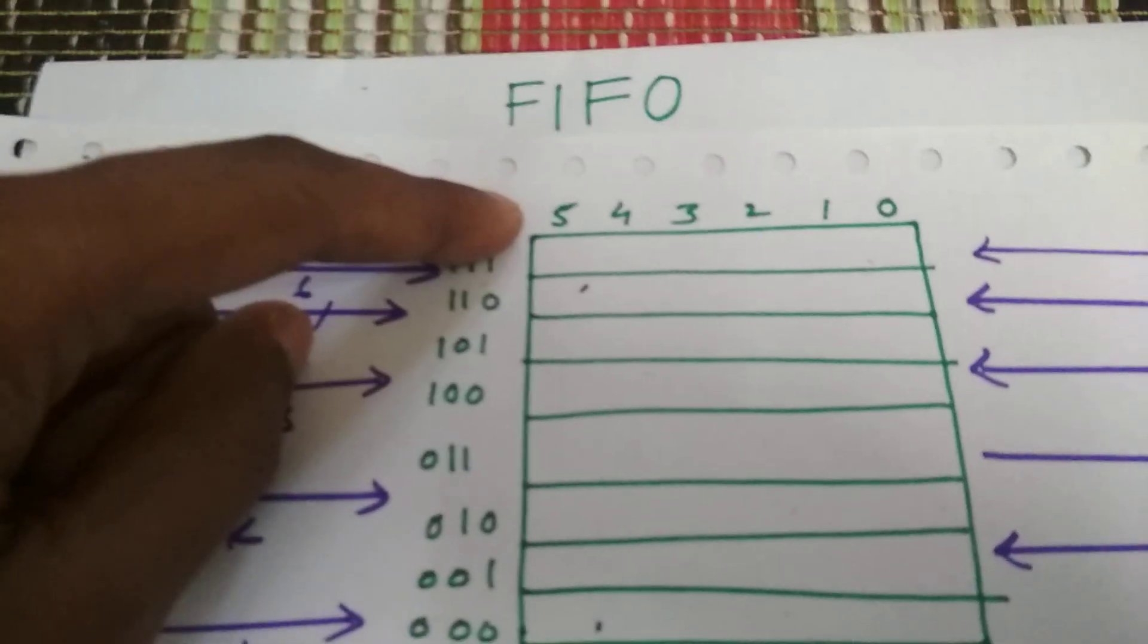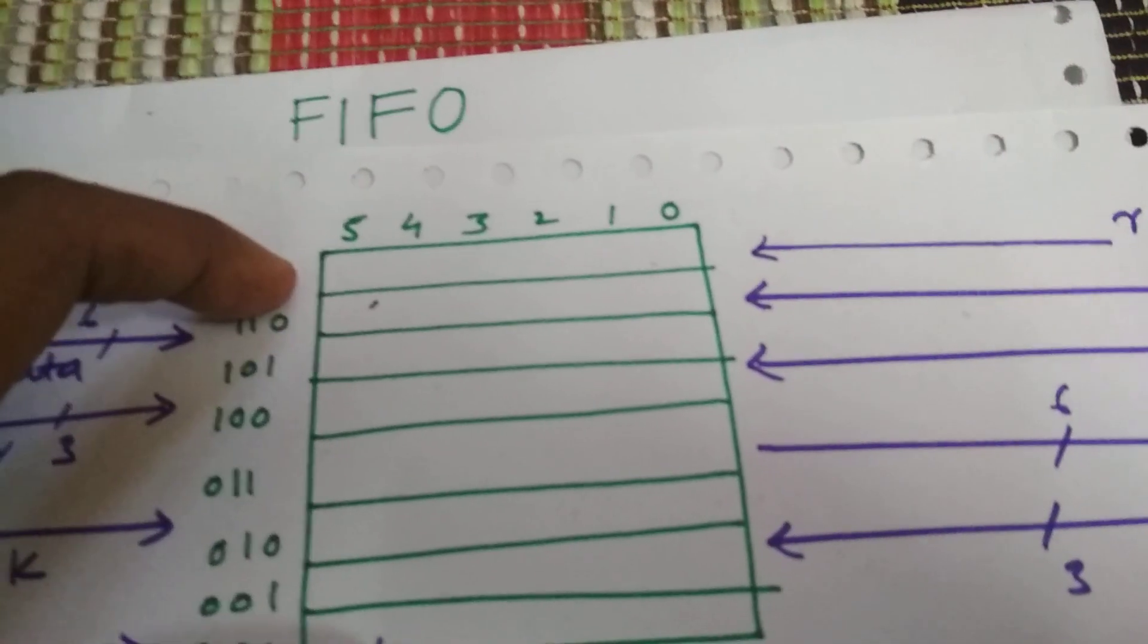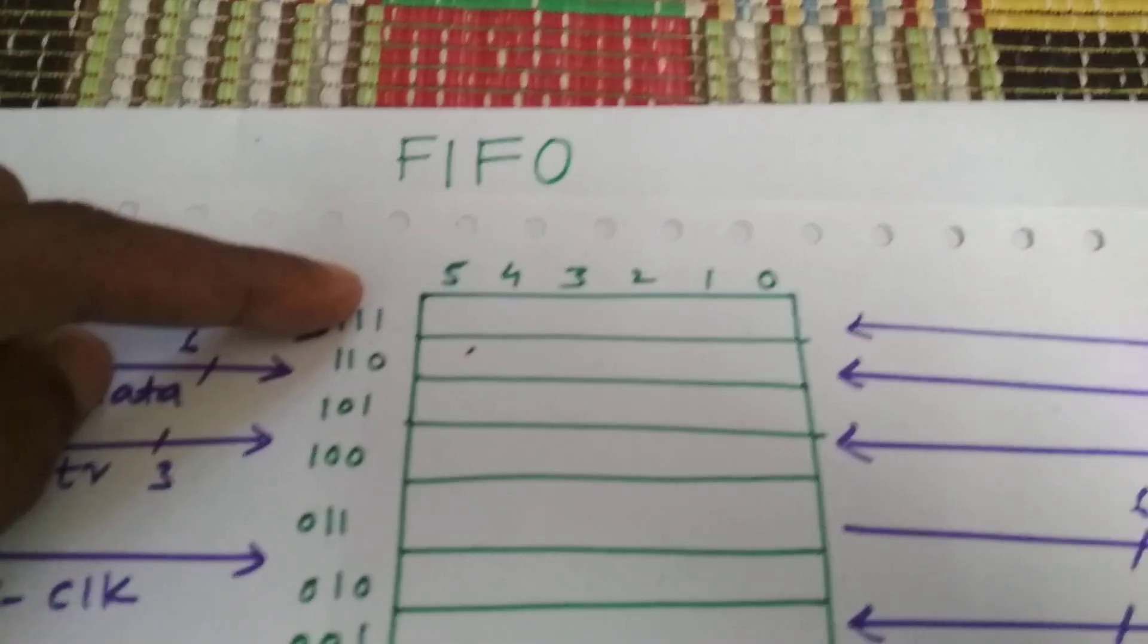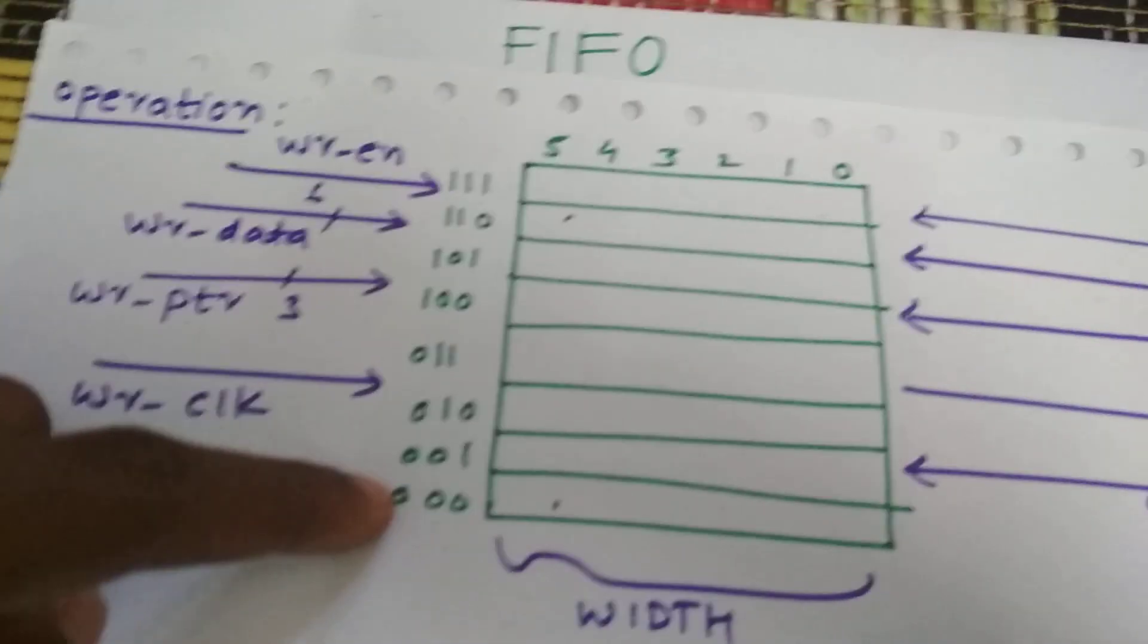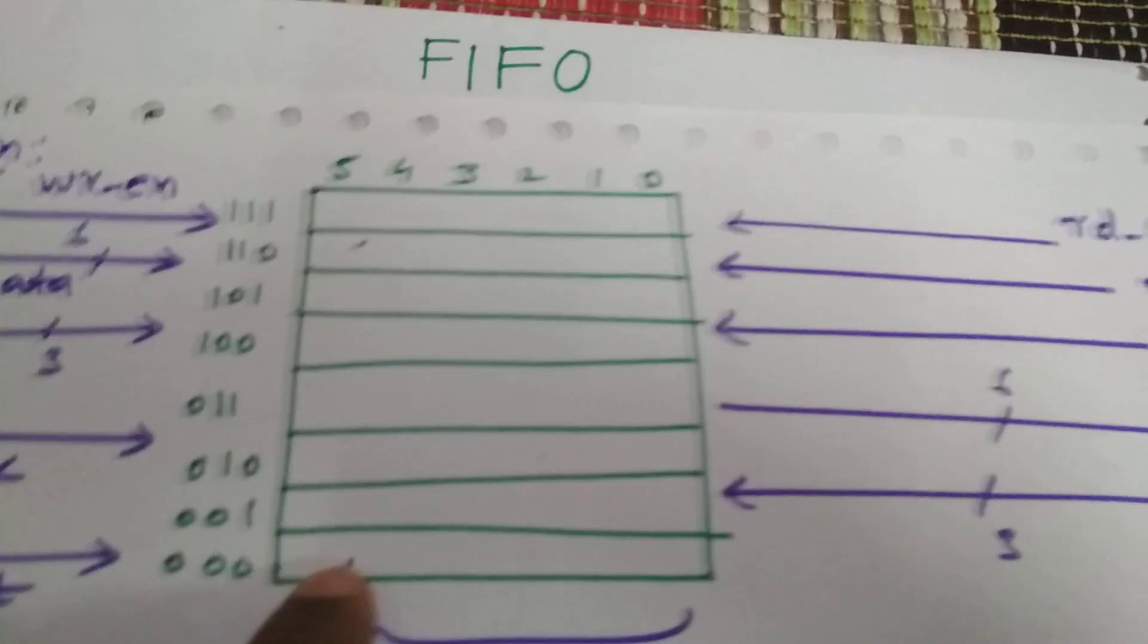So when the write pointer is over here and the read pointer is over here, then it's a full condition. After the write pointer reaches over here, then after if you increment the write pointer to write the data again, then it will go back to 0 and it will erase the data of 000 if any data is written here.